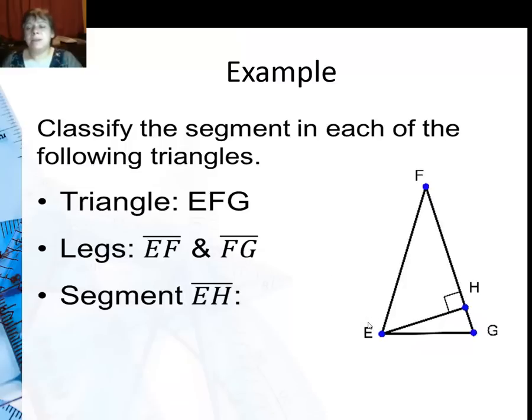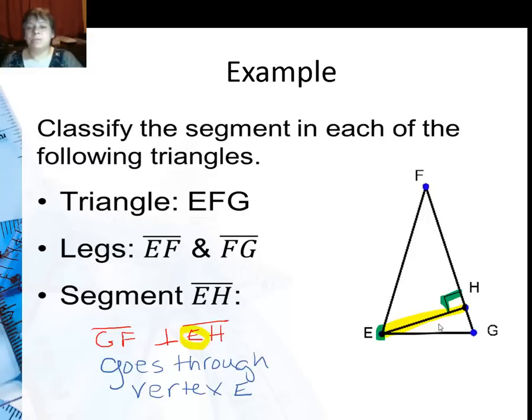On this next example, EFG, I have legs EF and FG and segment EH right here. Now, since it's creating a perpendicular angle, it's not bisecting it, and it is going through the vertex, this segment is an altitude. So it goes through the vertex, it's an altitude.